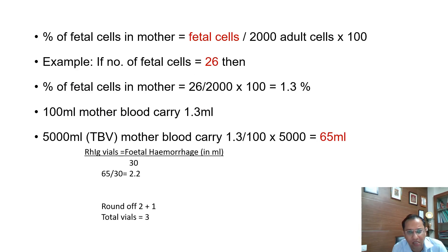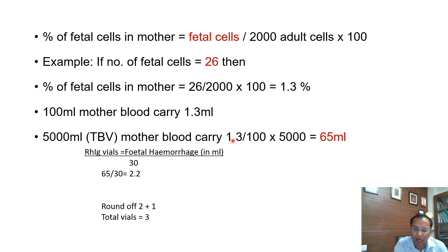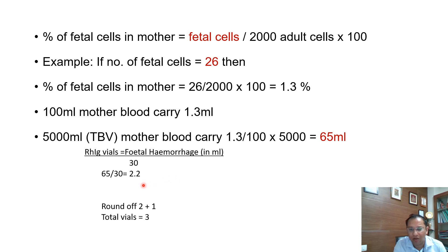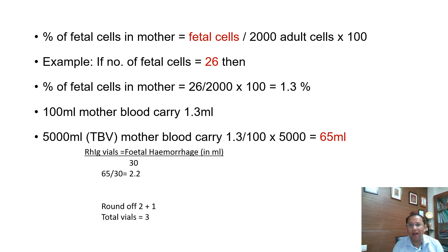Another example: 26 fetal cells out of 2000 gives 1.3%. In 5 litres of maternal blood, that equals 65 mL of fetal haemorrhage. Dividing 65 by 30 gives 2.2. Round 2.2 down to 2, then add one vial, giving a total of 3 vials. Remember: if the rosette test is negative (no anticipated FMH), you still must give a minimum of one vial of RhIg.